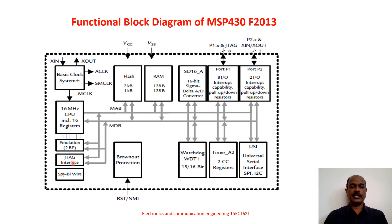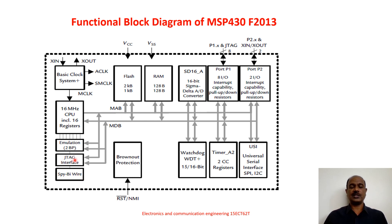There is also a JTAG interface and a spy-by-wire interface. The JTAG interface is mainly used for downloading the program written on the PC to this microcontroller — for programming the IC. The same programming function can be done either by using the JTAG interface or by using a two-wire system called spy-by-wire. By using either interface, the user can load a program from the computer to the microcontroller.